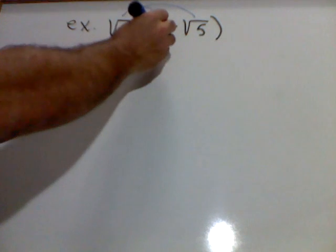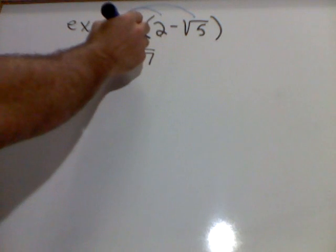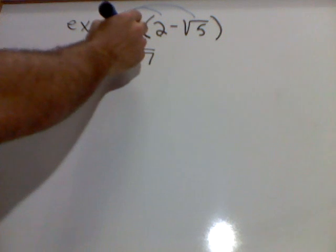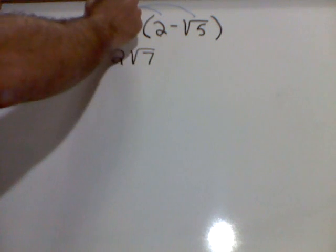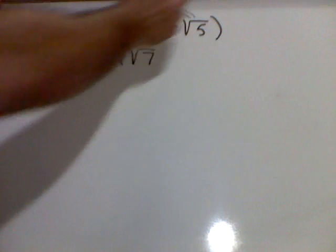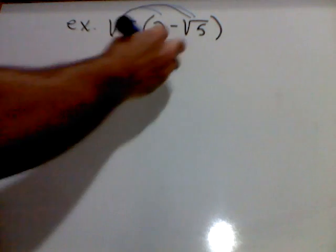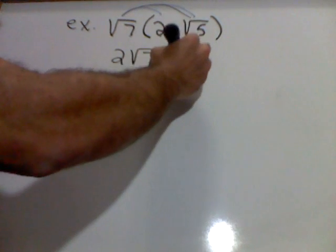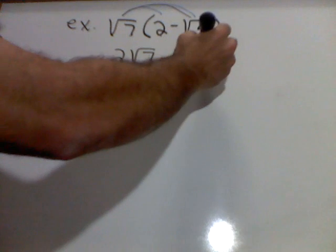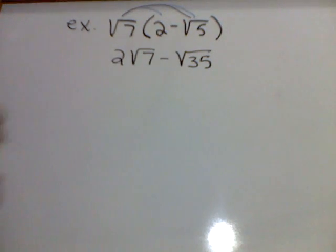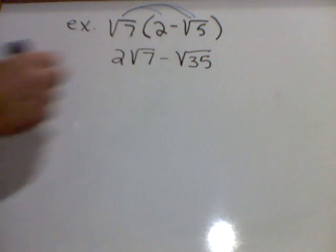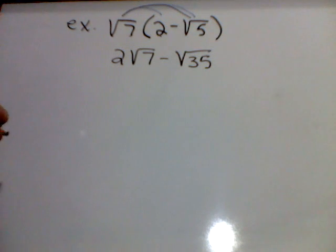Remember, numbers outside a radical cannot multiply with numbers under a radical. Now, square root of 7 times that square root of 5 gives me a negative square root of 35. Now, there is no perfect squares that are factors of these numbers, so that is my final answer.